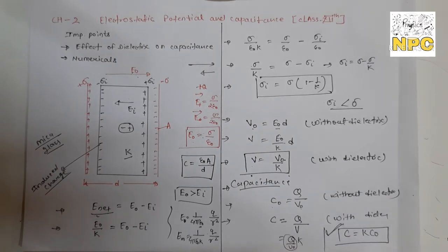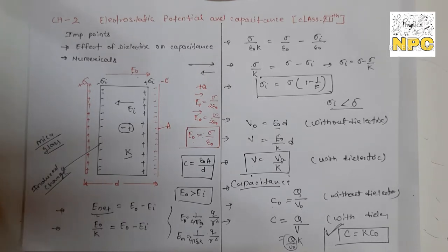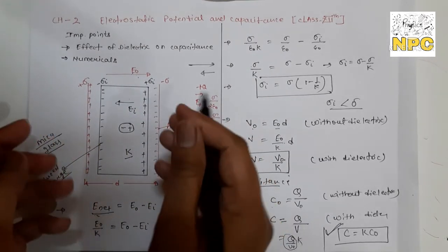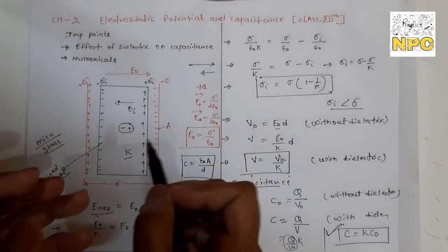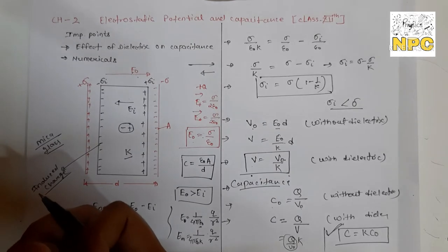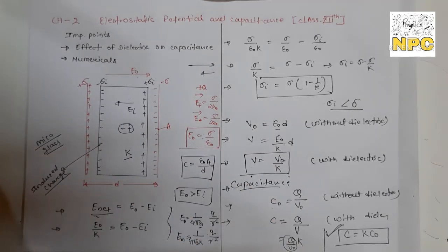This is the most important equation: C = K·C₀. We insert dielectric so that the capacitance between the plates increases K times, increasing the ability of the capacitor to hold more charge and energy. Another important purpose of dielectric is that since the two plates have opposite charges, they create an attractive force and might stick together. To prevent this, we use dielectric between the plates.